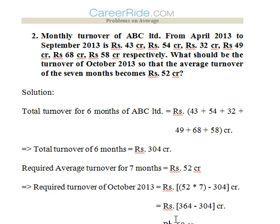Second question: Monthly turnover of ABC Limited from April 2013 to September 2013 is 43 crore, 54 crore, 32 crore, 49 crore, 68 crore and 58 crore respectively. What should be the turnover of October 2013 so that the average turnover of 7 months starting from April to October becomes 52 crore? We don't have the value of the turnover for October, but we have all the turnover values for the other 6 months.